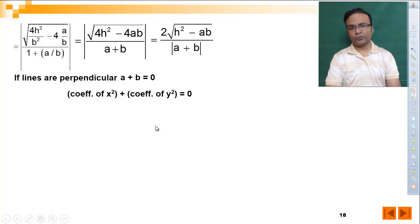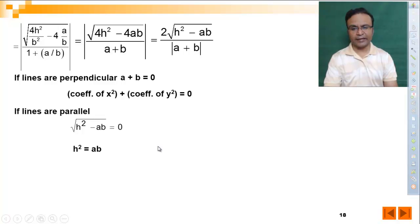Suppose lines are parallel. If lines are parallel, then angle theta becomes zero, tan zero is zero, so what becomes zero? The numerator. By making numerator zero, we get h square equals ab. This is the condition for two lines parallel or coincident. If lines are coincident, then also h square equals ab. Both their slopes are the same.